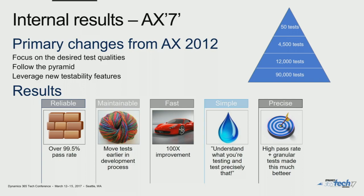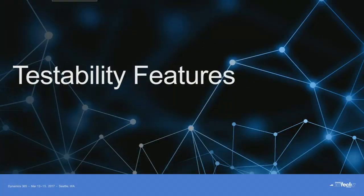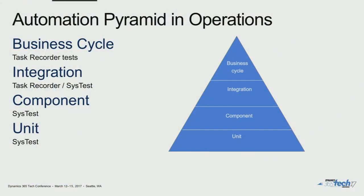With that, we're going to start talking about testability features. The basic tools to address tests in the pyramid from an automation perspective: at the unit and component level, it's all about SysTest. SysTest is a unit test framework in our X++ toolset — it's been there since AX4. It's a test harness like NUnit or JUnit that provides basic functionality for you to write your tests from a code perspective.